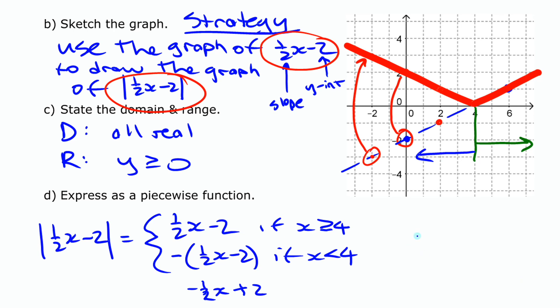So this was the first example of looking at the absolute value of a function — in this case, the absolute value of a linear function. In part two, we're going to look at the absolute value of a quadratic function, so stay tuned. Thank you.